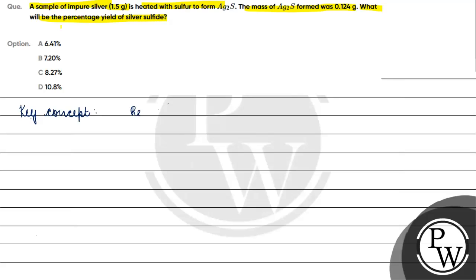The key concept for this question is the reaction of silver with sulfur. If we talk about the reaction of silver with sulfur, what will happen? 2Ag + S gives us Ag2S.